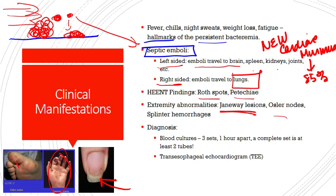Diagnosis requires a couple of things. First, at least three sets of blood cultures need to be drawn before antibiotics are administered — before, before, before. If you give the patient antibiotics first, you might kill off the causative bacteria and not even know. Three sets of blood cultures should be drawn before antibiotics, from different sites such as different arms, and ideally spaced one hour apart. This way, you can be certain it's not a transient or intermittent bacteremia — you want to know if this is intermittent or continuous, and rule out false positives from poor skin prep.